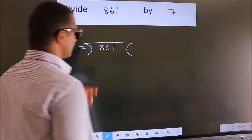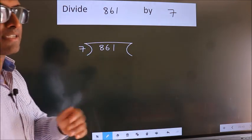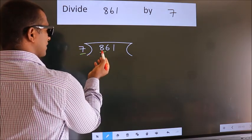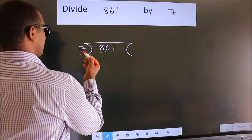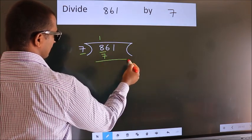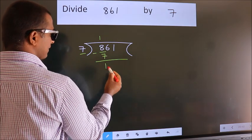This is your step 1. Next, here we have 8, here 7. A number close to 8 in 7 table is 7 once 7. Now, we should subtract. We get 1.